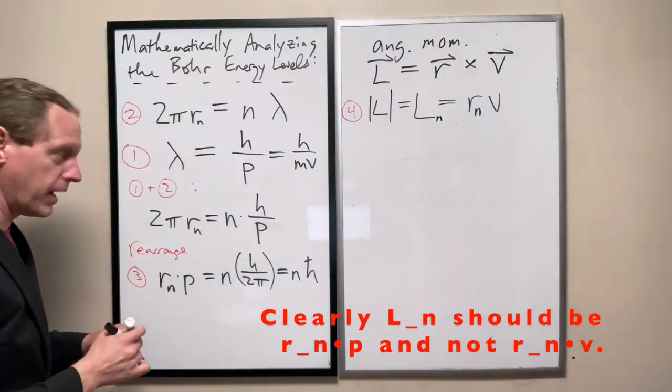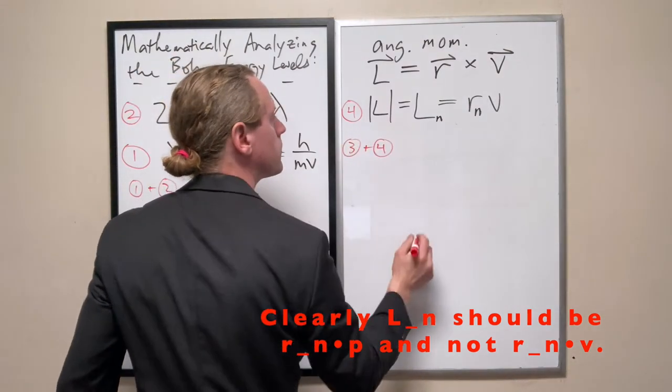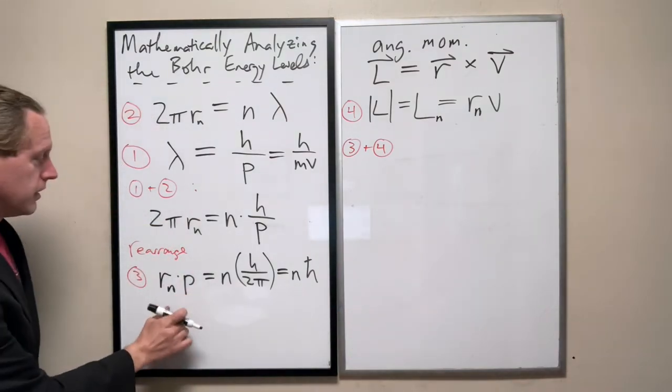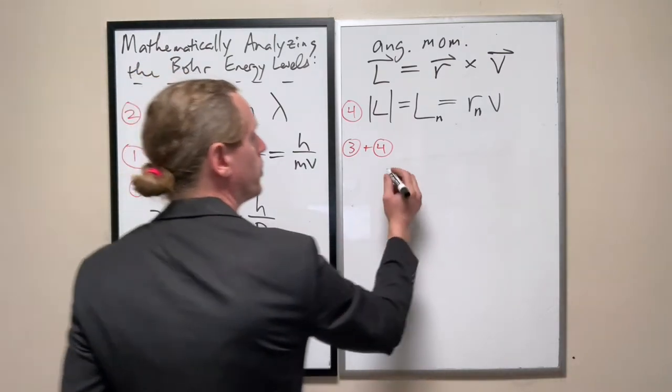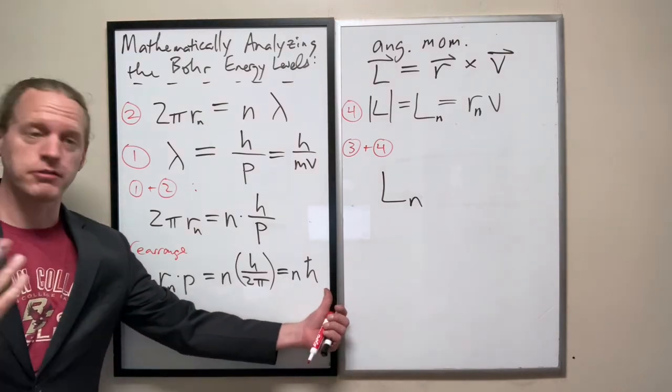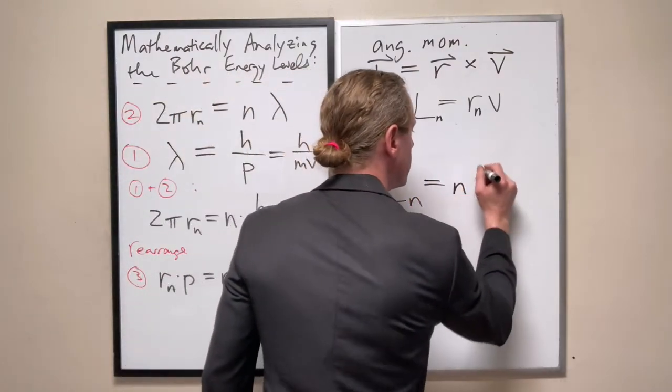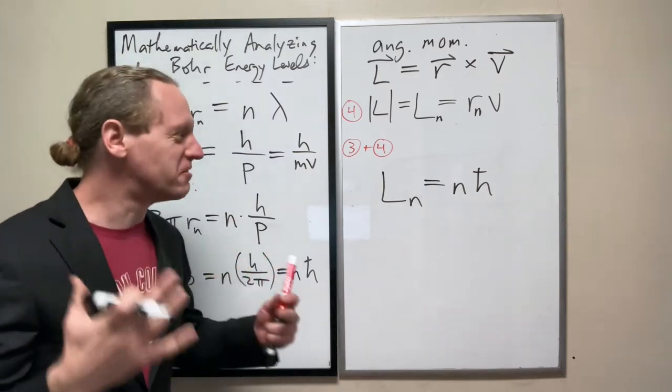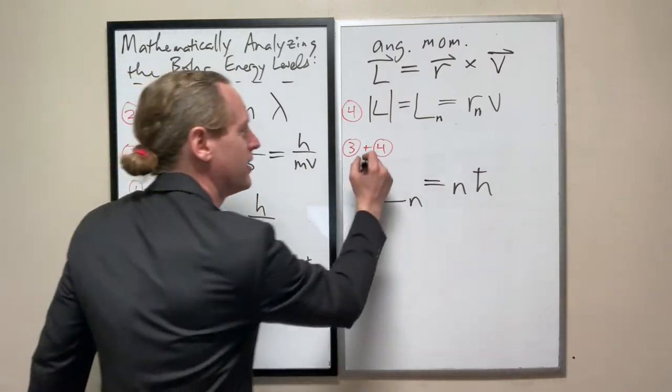So, what I'm going to do now is simply just combine three and four. And at this point, here's what we get. The left-hand side is simply just the angular momentum. We have L sub n, and the right-hand side, after writing it with the reduced Planck constant, is n h-bar. And this is a really foundationally absolute essential thing here.